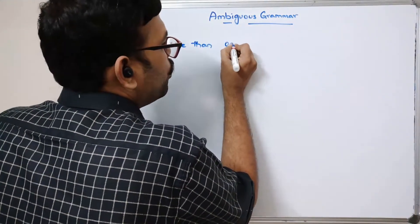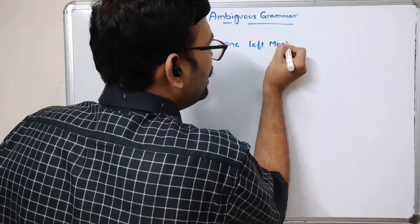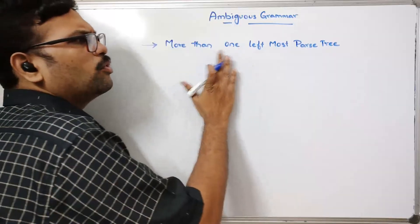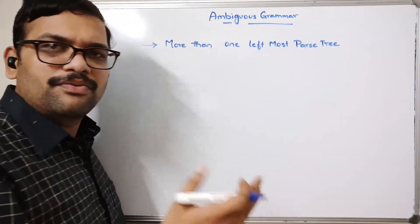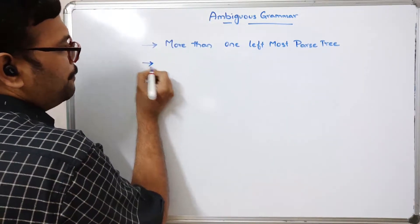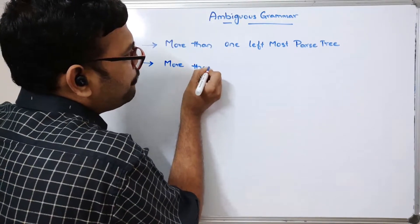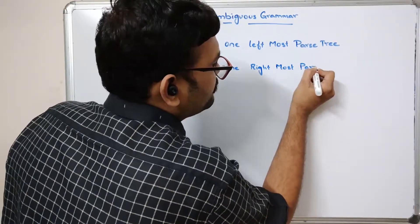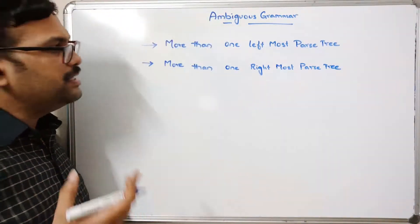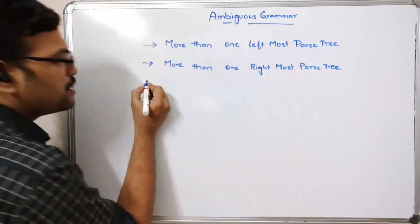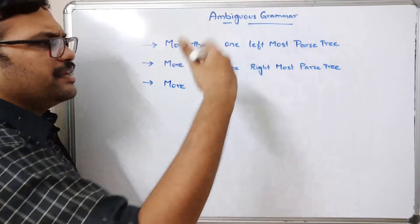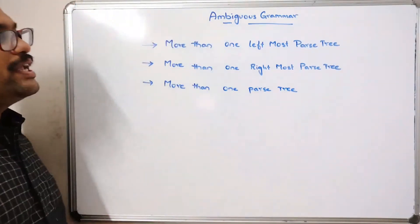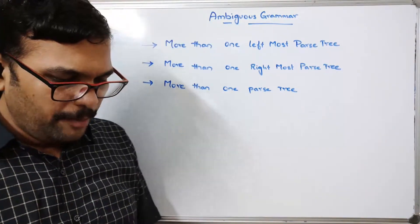If a grammar has more than one leftmost parse tree or more than one rightmost parse tree — we can call them parse trees or derivation trees — then we can say that grammar is ambiguous.